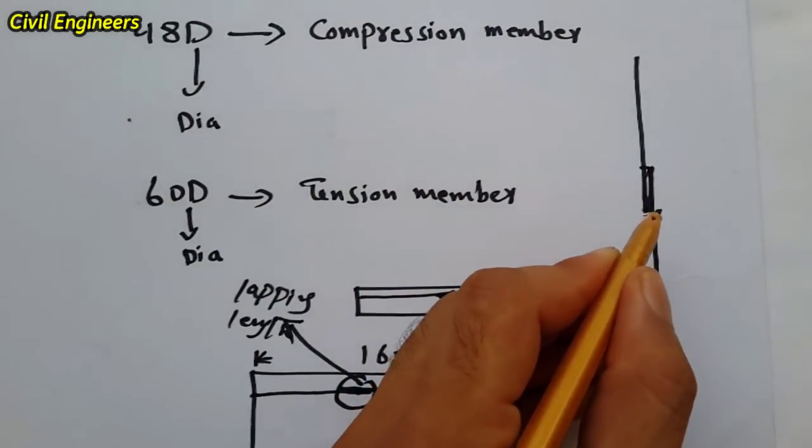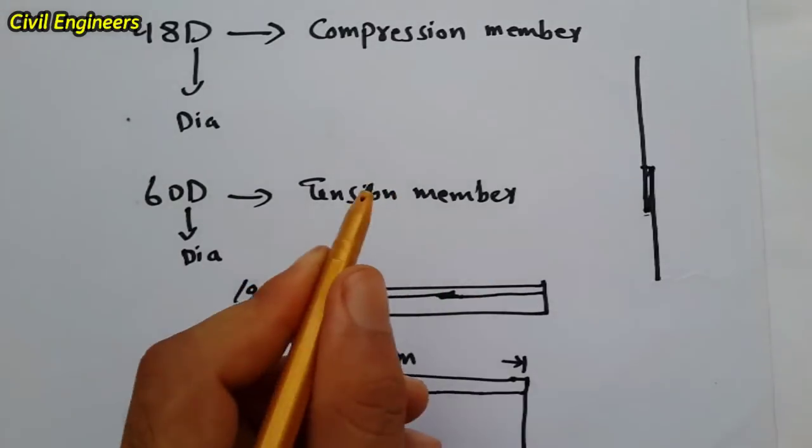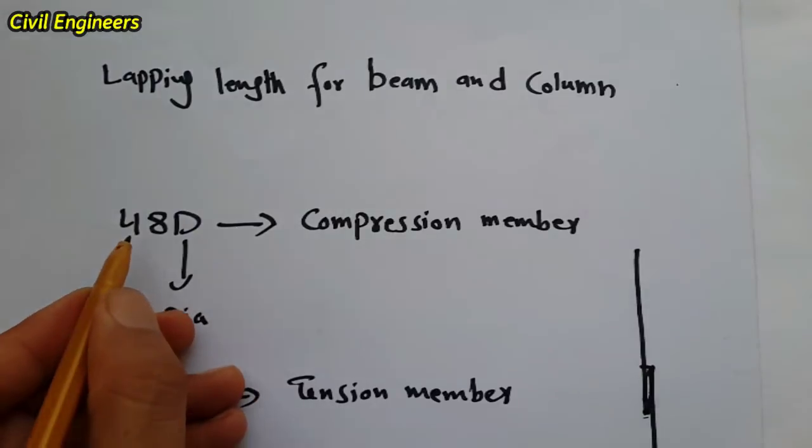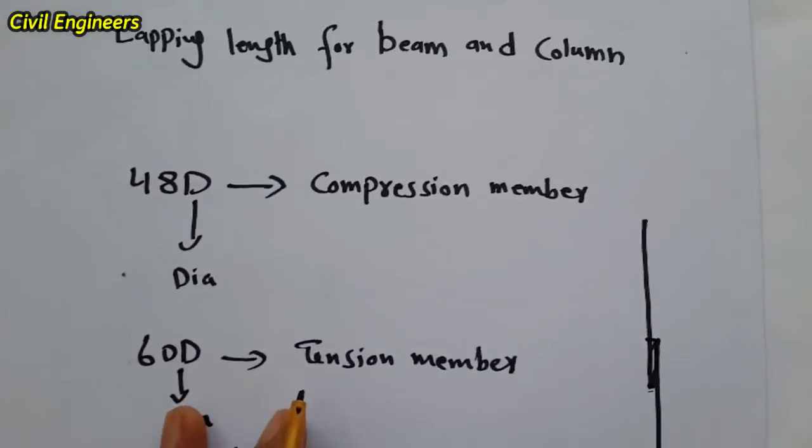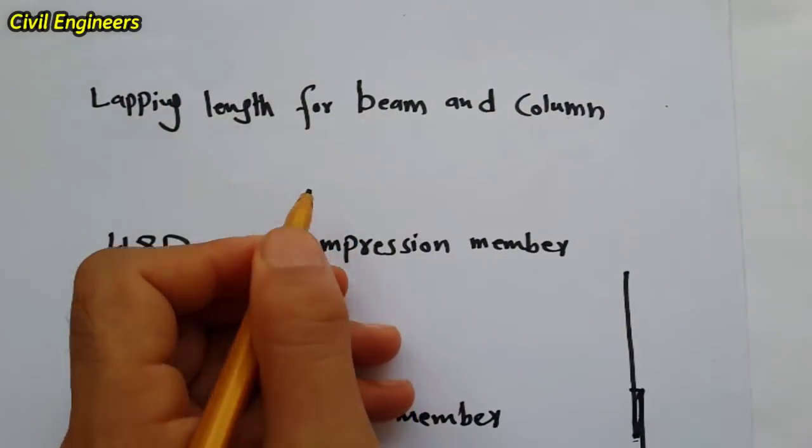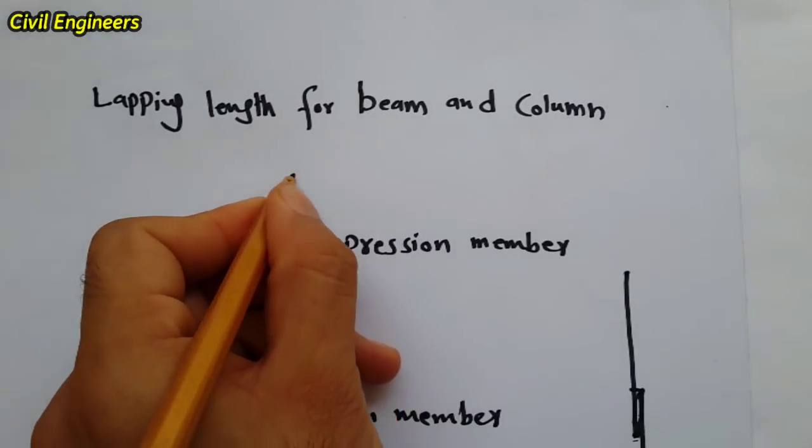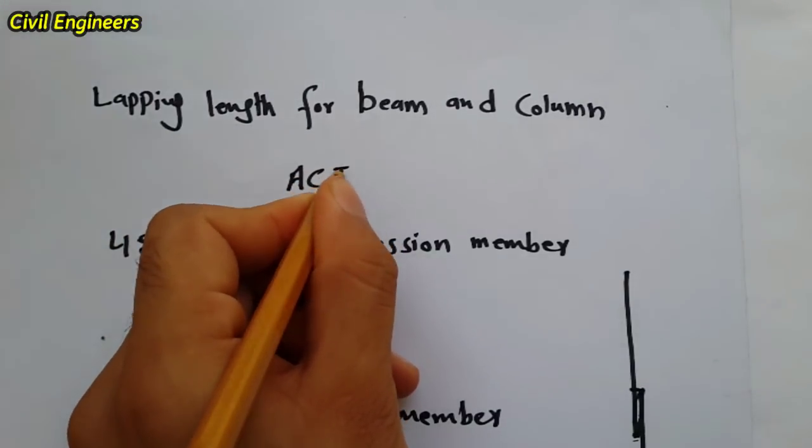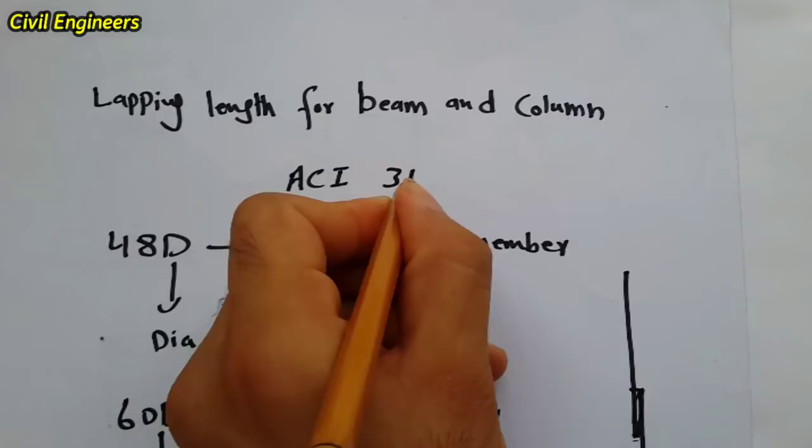For longitudinal bars, these are the specific formulas. But we can use 48D and 60D with the help of ACI codes 318.